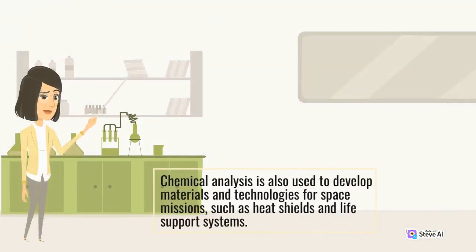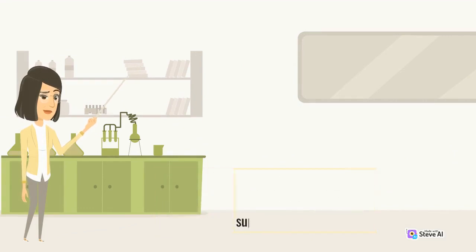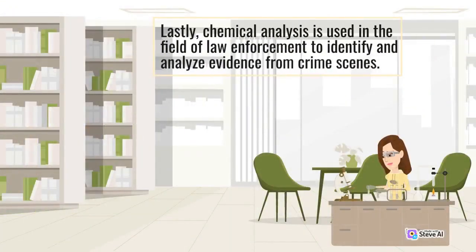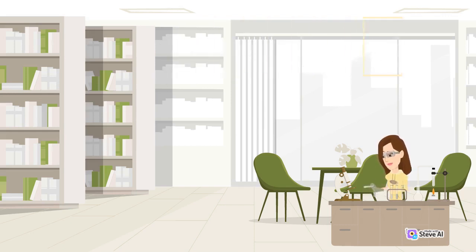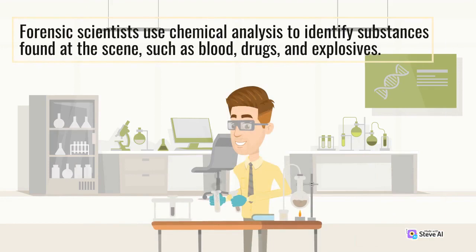Chemical analysis is also used to develop materials and technologies for space missions, such as heat shields and life support systems. Lastly, chemical analysis is used in the field of law enforcement to identify and analyze evidence from crime scenes. Forensic scientists use chemical analysis to identify substances found at the scene,